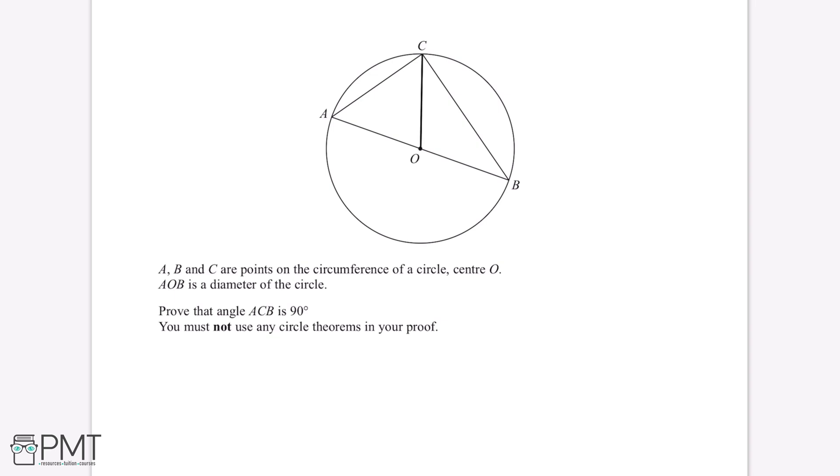The first thing we can do is split this triangle into 2, and then label these angles X and Y. Because AOB is the diameter of the circle, line AOB must be a straight line. Because angles on a straight line add up to 180 degrees, this means that X plus Y is equal to 180 degrees.